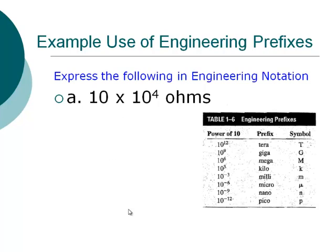We'll do this one first. I have 10 times 10 to the 4th ohms. The whole concept of engineering notation is that we work in powers of 10 that are multiples of 3. For example, 10 to the 3rd is a kilo, with symbol small k. The next power of 10 is a mega, that's 10 to the 6th, then giga is 10 to the 9th, and tera is 10 to the 12th.